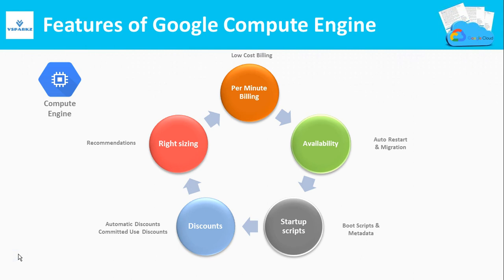These are some features of Google Compute Engine. First is Billing. GCP bills your machines on a per-minute basis. For example, if you run a machine for 62 minutes, you pay for 62 minutes alone. Some cloud providers bill you on an hourly basis, so for 62 minutes you would have to pay for 2 hours with those other providers.